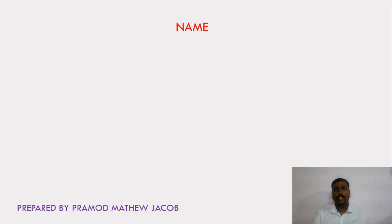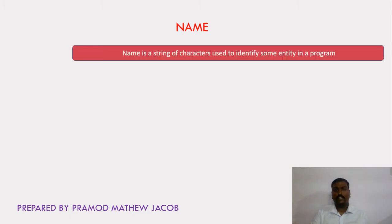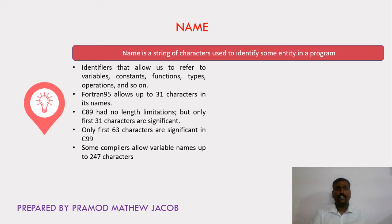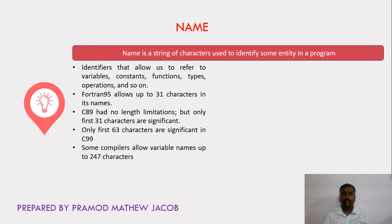First, let's understand what a name is and its significance in programming languages. A name is a string of characters used to identify some entity in a program — the identifiers that allow us to refer to variables, constants, functions, types, operations, etc. Usually a name can have a maximum of 31 characters. Fortran 95 allows up to 31 characters. C89 had no length limitation, but only the first 31 characters are significant. In C99, the first 63 characters are significant. Some compilers allow variable names up to 247 characters, so typically there is no strict length limitation.